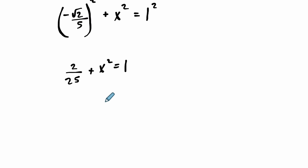Then I'm going to subtract 2 over 25 on both sides. So we get 1, which is really, I'll write that as, we'll write x squared equals 25 over 25. That's 1 minus 2 over 25, which is 23 over 25.